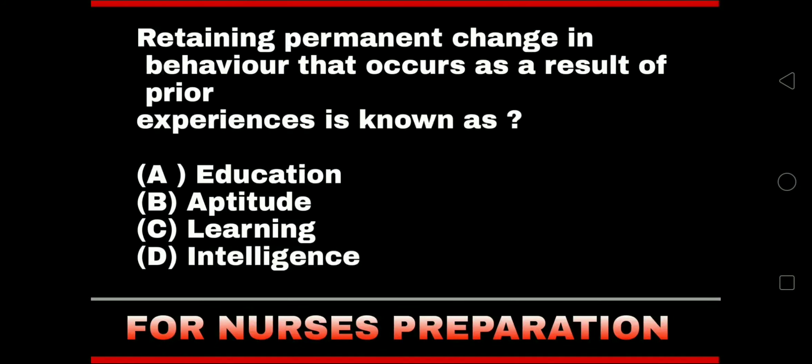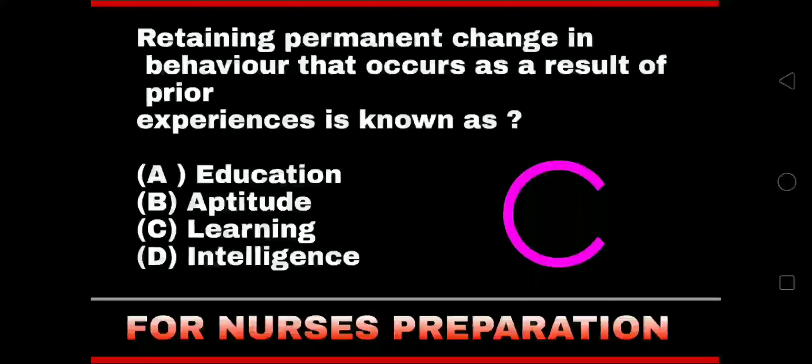Retaining a permanent change in behavior that occurs as a result of prior experiences is known as — education, aptitude, learning, or intelligence. The right answer is Option C: learning. With the help of learning, we can make a permanent change in behavior.